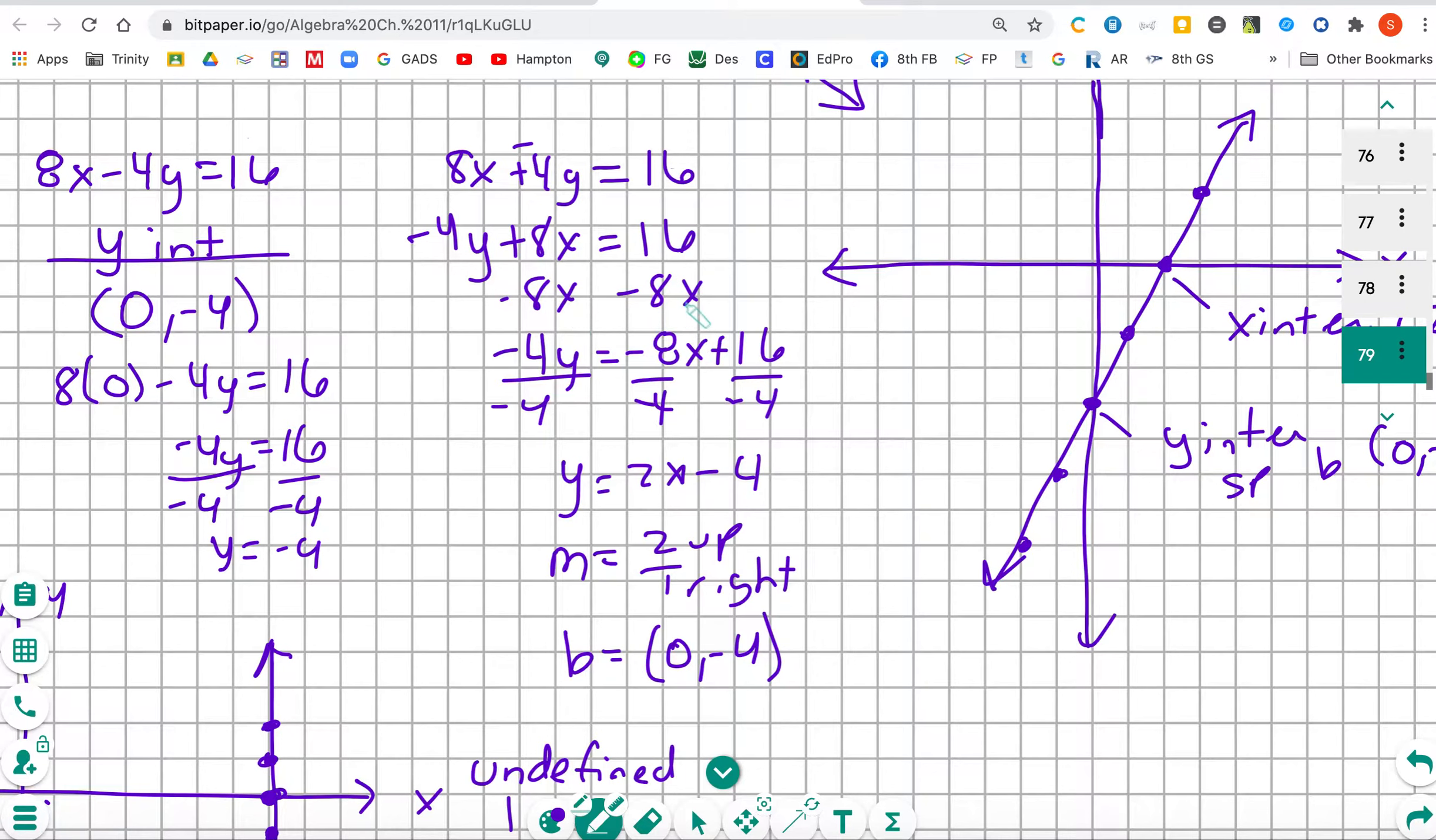We're going to zero pair out the 8x on both sides, brother-sister rule. Then we're going to divide by negative 4. Divide by negative 4 with the x term. Divide by negative 4 with the constant. That's going to give us y is equal to 2x minus 4.